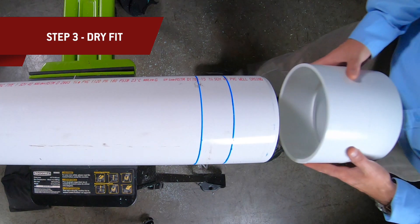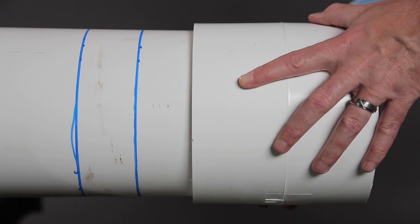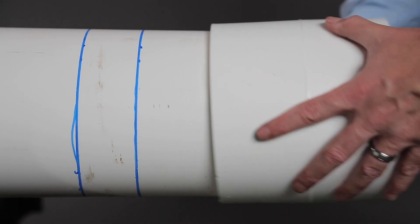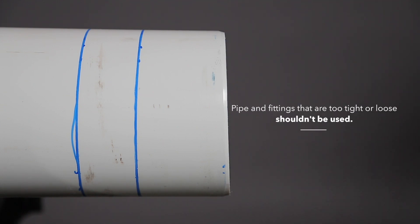Do a dry fit. With light pressure, the pipe should go one half to two thirds of the way into the fitting hub. Pipe and fittings that are too tight or too loose shouldn't be used.